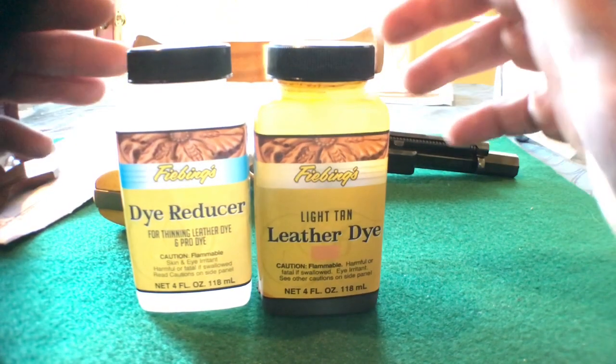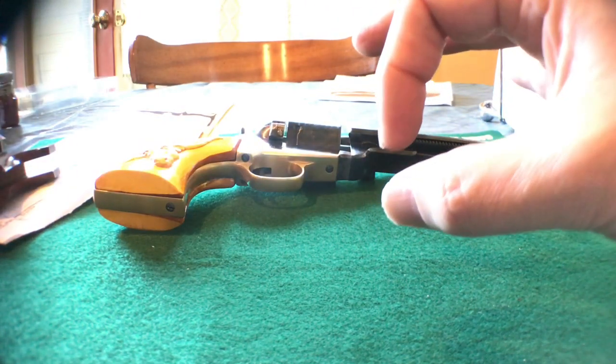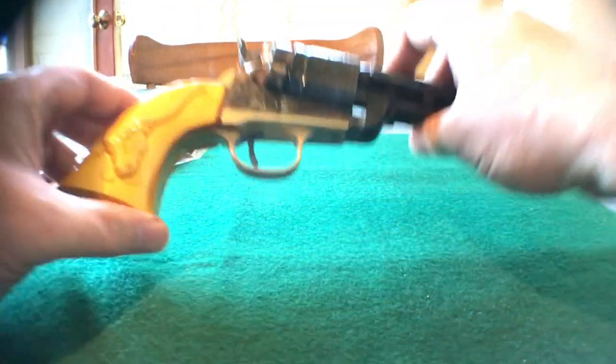To be honest, what I did was not very scientific. I took a plastic container and I put six caps of this, one cap of dark brown, and I believe six caps of dye reducer, mixed it around. I put on one coat with a .38 caliber cloth cleaning patch. I have some round ones, doesn't really matter, but I used a cloth cleaning patch about that big. Rubbed it on, let it dry overnight.